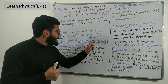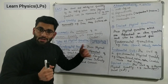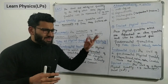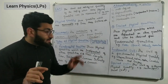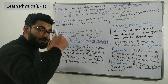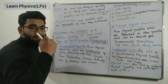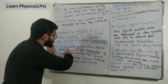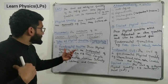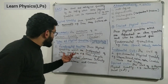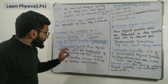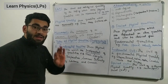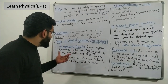Coming to the types of physical quantities — on the basis of dependence on each other — we have two types. Those quantities which depend on other physical quantities are called derived quantities. Those which are not dependent on other quantities are called fundamental quantities. Fundamental quantities are independent of other quantities; they are the basic, foundational quantities.